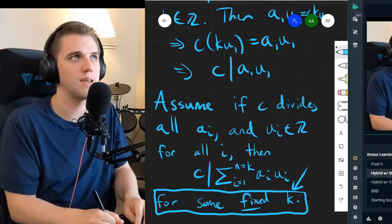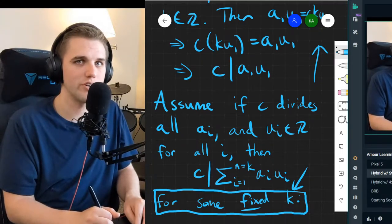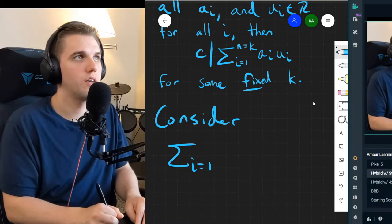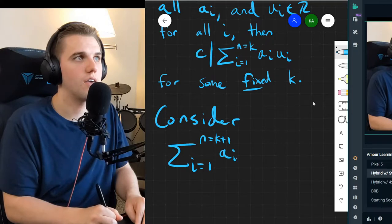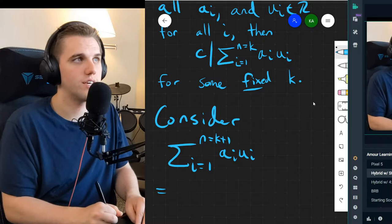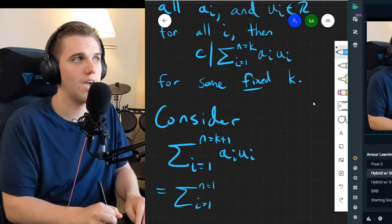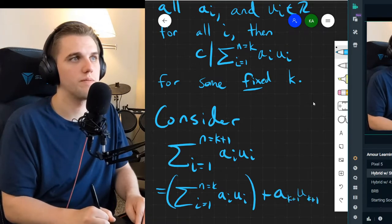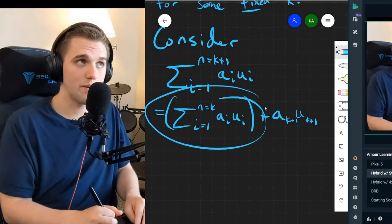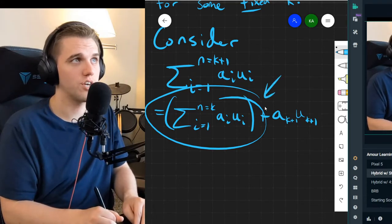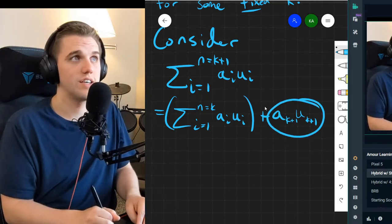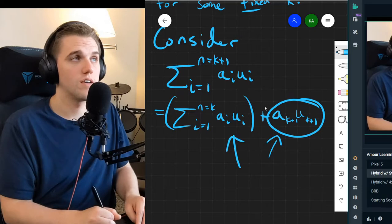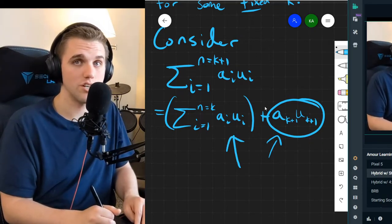I want to clarify that this K is not the same as the K used above — that was just a notational mistake. Now consider the sum from I equals 1 to N equals K+1 of A_i·U_i. We can rewrite this as the sum from I equals 1 to K of A_i·U_i, plus A_{K+1}·U_{K+1}. By the inductive hypothesis, the first part is divisible by C, and A_{K+1} is also divisible by C, so the entire sum is divisible by C.